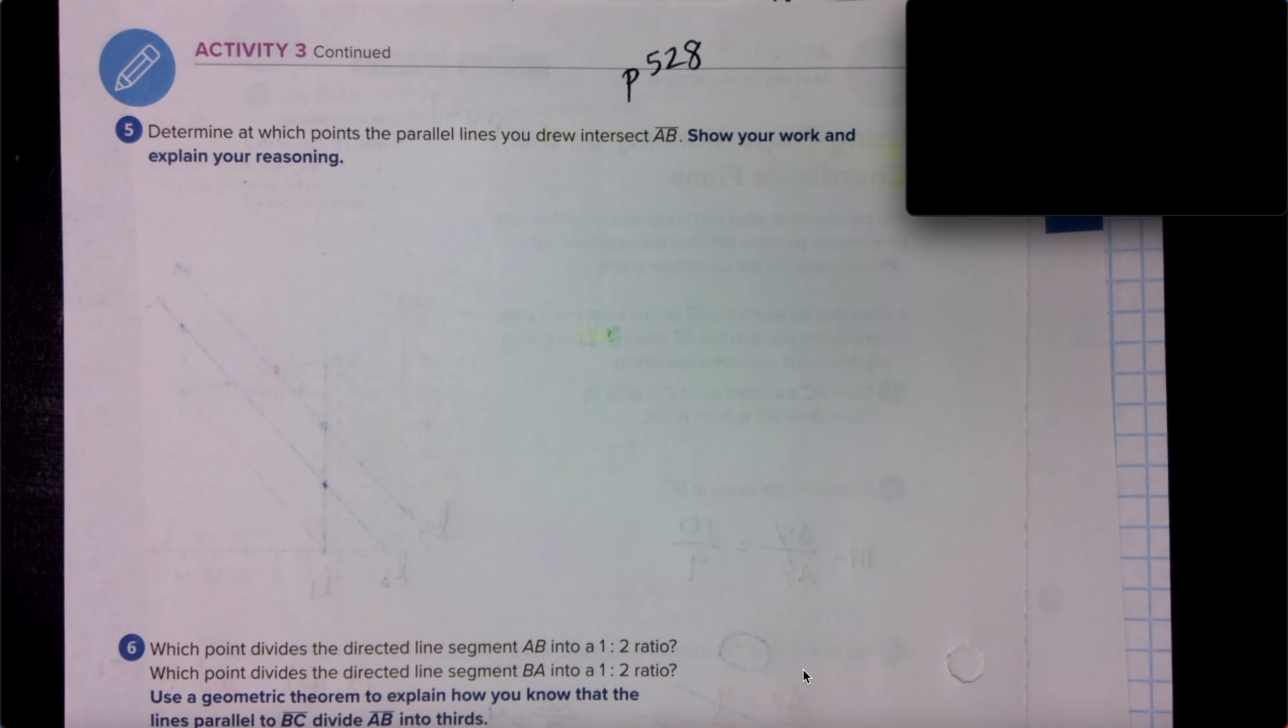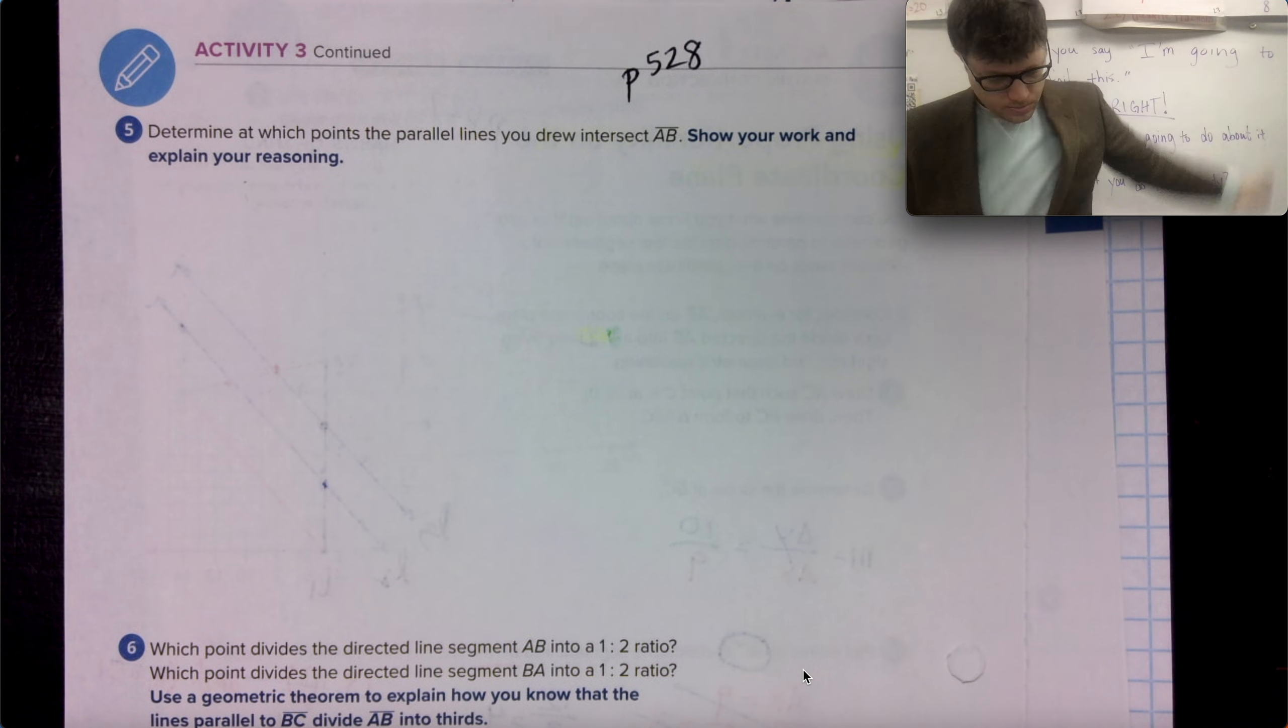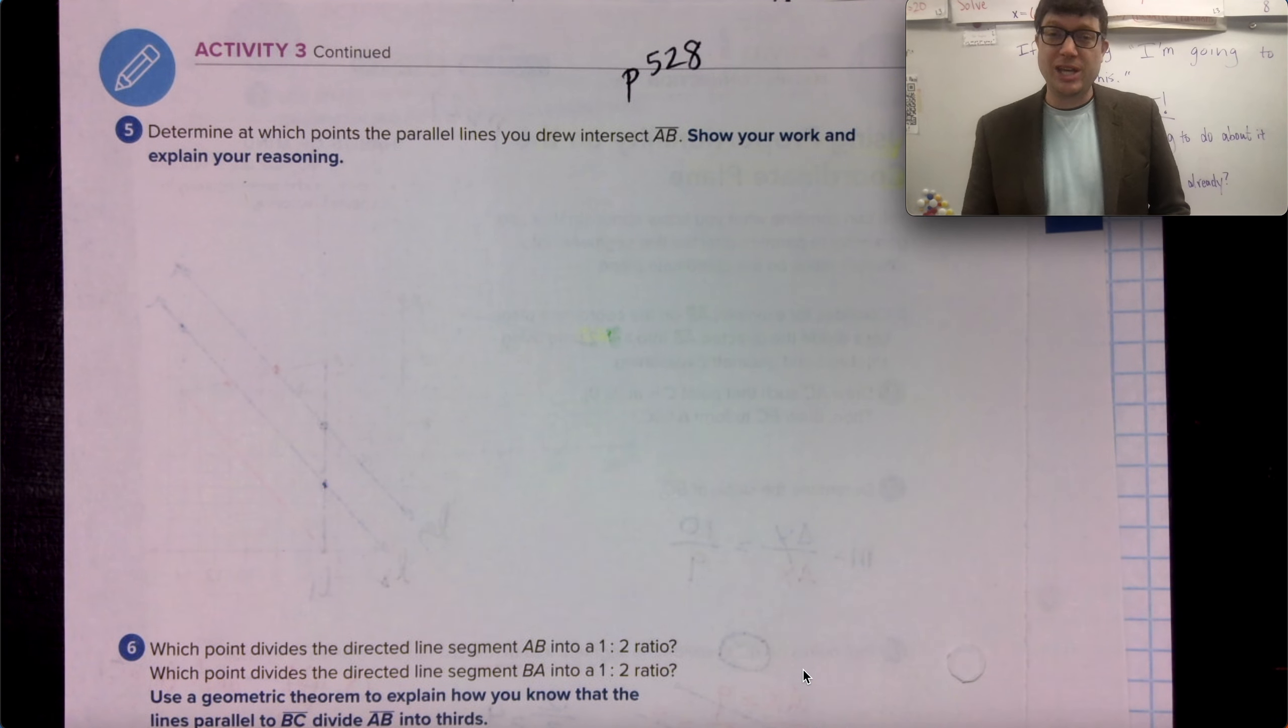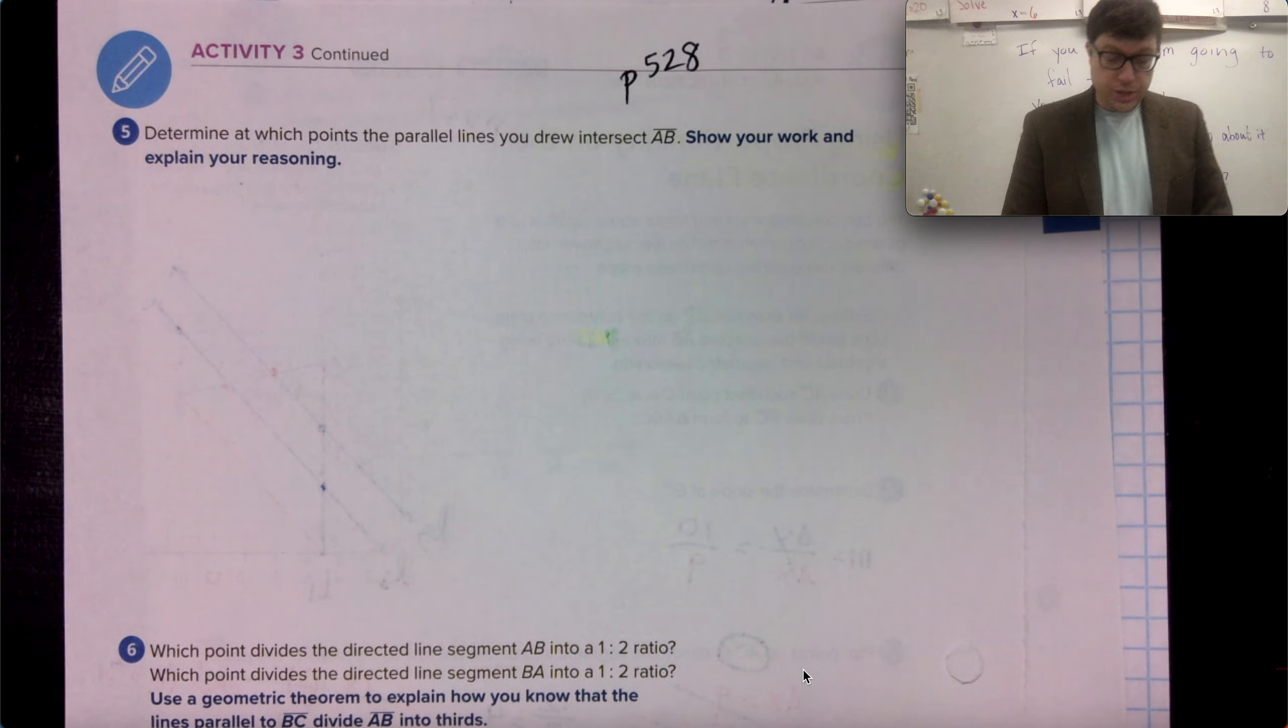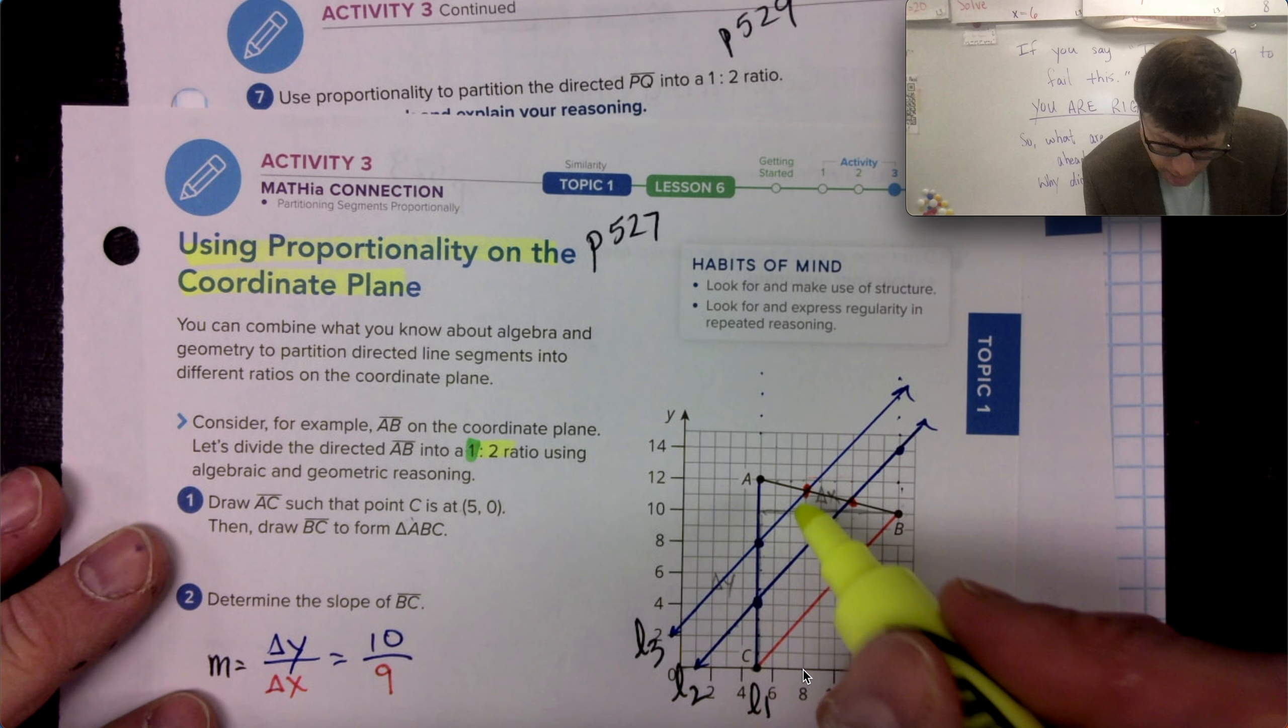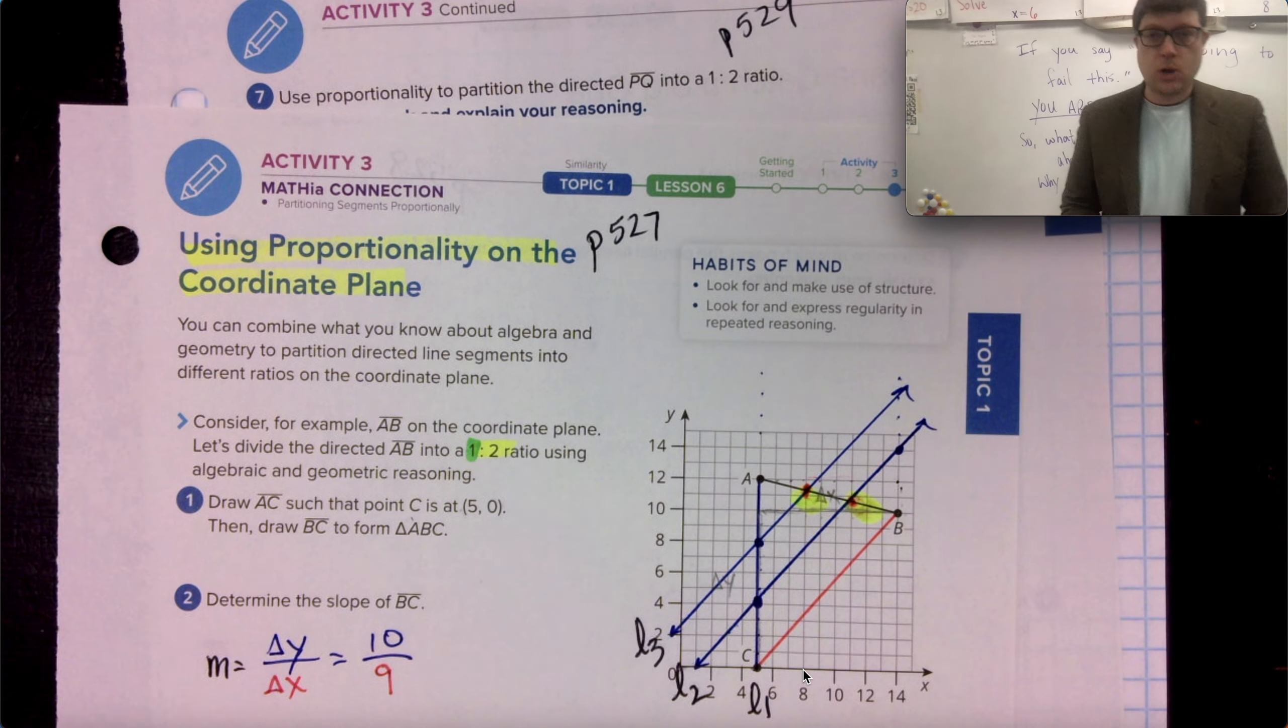Five. Determine the points where the parallel lines you drew intersect AB. So this question five is asking us where this coordinate is and where that coordinate is.